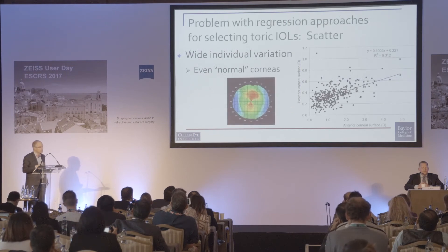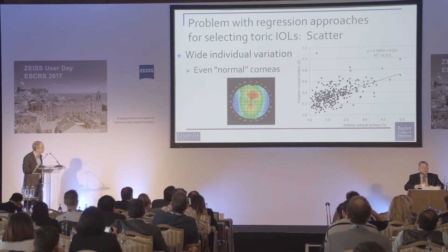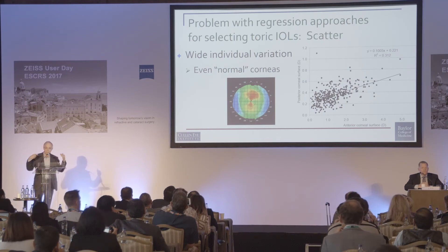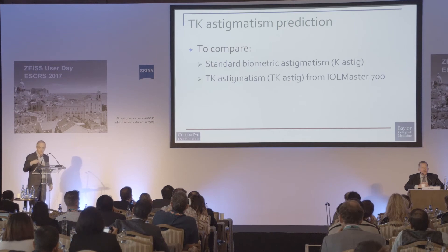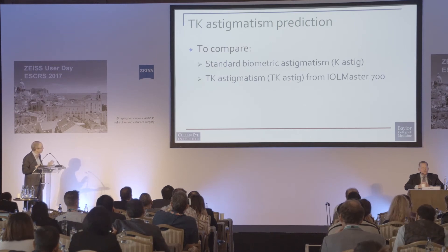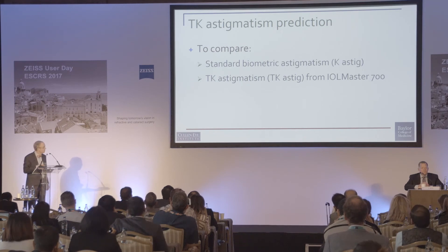Regression approaches fail for many reasons — some may relate to our refraction — but there's so much scatter in the human population that applying a population average to the next patient will introduce errors. Regarding the TK total corneal astigmatism available with the IOL Master 700, we've been working with that and compared standard biometry based on anterior corneal surface measurements to the TK measurements from that device.